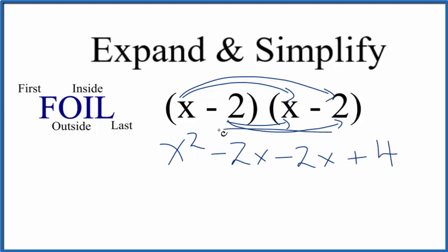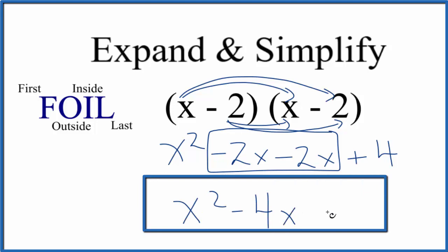We can combine these two terms together, and that ends up giving us x squared minus 4x plus 4.